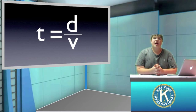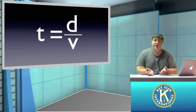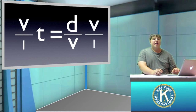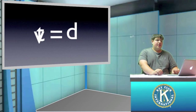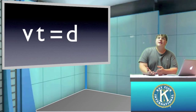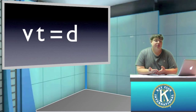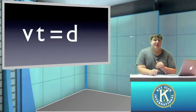This equation allows us to find the time if we know the distance and the velocity the object is moving. Now if we multiply both sides by v over 1, the v's cancel out, and we find that vt is equal to d. This is a third variation of the equation, which lets us find the distance an object moves if we know its velocity and the time it was going at that velocity.